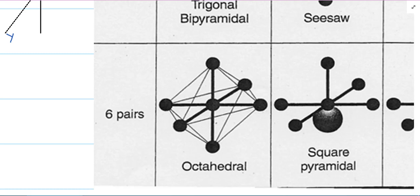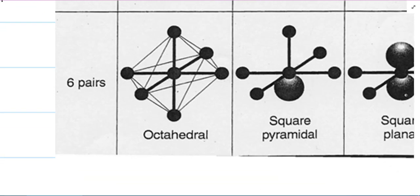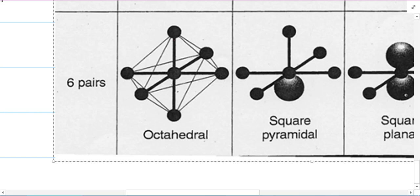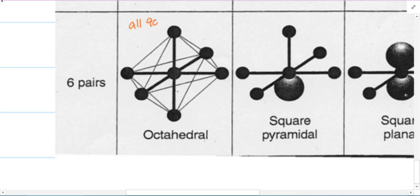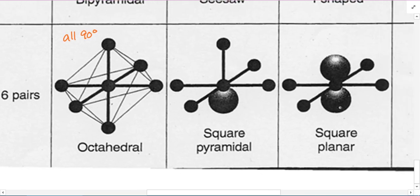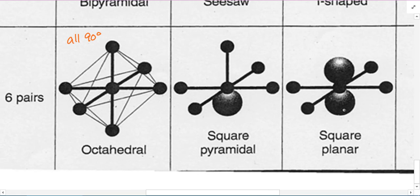Last but not least, octahedral — fits inside an octahedron, and all bond angles are 90 degrees. Now if we look at derived shapes: with six pairs and one lone pair, that lone pair represents two electrons. There's still electron density there; it's just not bonding — like an open parking space.